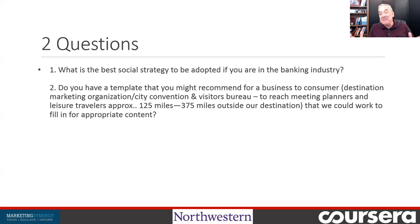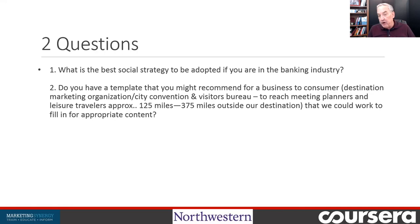The second question is really the first chapter of my book: do you have a template for a business-to-consumer destination marketing organization — city convention, visitor bureaus — to reach meeting planners and leisure travelers approximately 125 to 375 miles outside of our destination? One of the things I find when working with entrepreneurs is that they are totally unaware of really great big data systems that are free and can target not only the United States, but the world. We'll talk just about the United States.